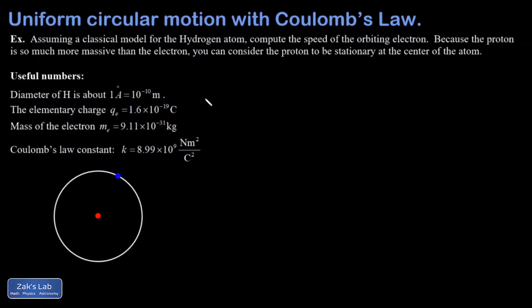In this video we're going to approximate the speed of an electron that's orbiting in a hydrogen atom and we're using a naive classical model for this. So we're pretending the electron is just orbiting the proton with an orbit of a diameter equal to one angstrom, the approximate diameter of the hydrogen atom.